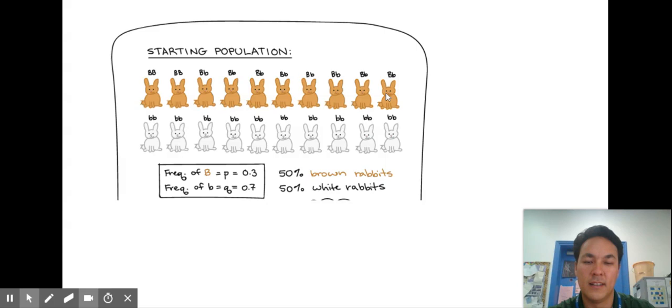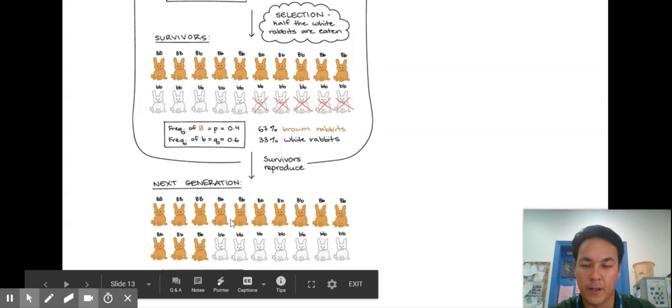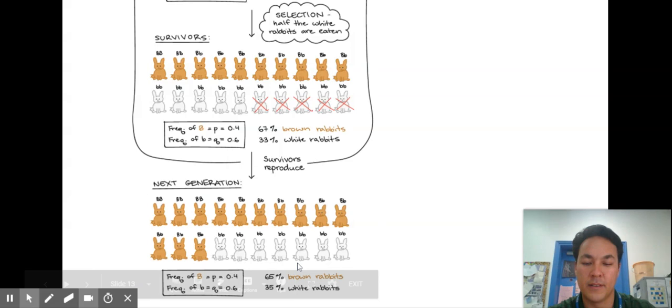So here would be brown rabbits here would be white rabbits there's going to be some type of selection it looks like it's bad to be a white bunny rabbit you don't want to get eaten oh no so over the next generation the dark bunny rabbits reproduce more they're more likely to reproduce look at the percentage of genes that code for the brown rabbits went from 50 percent to 65 percent.